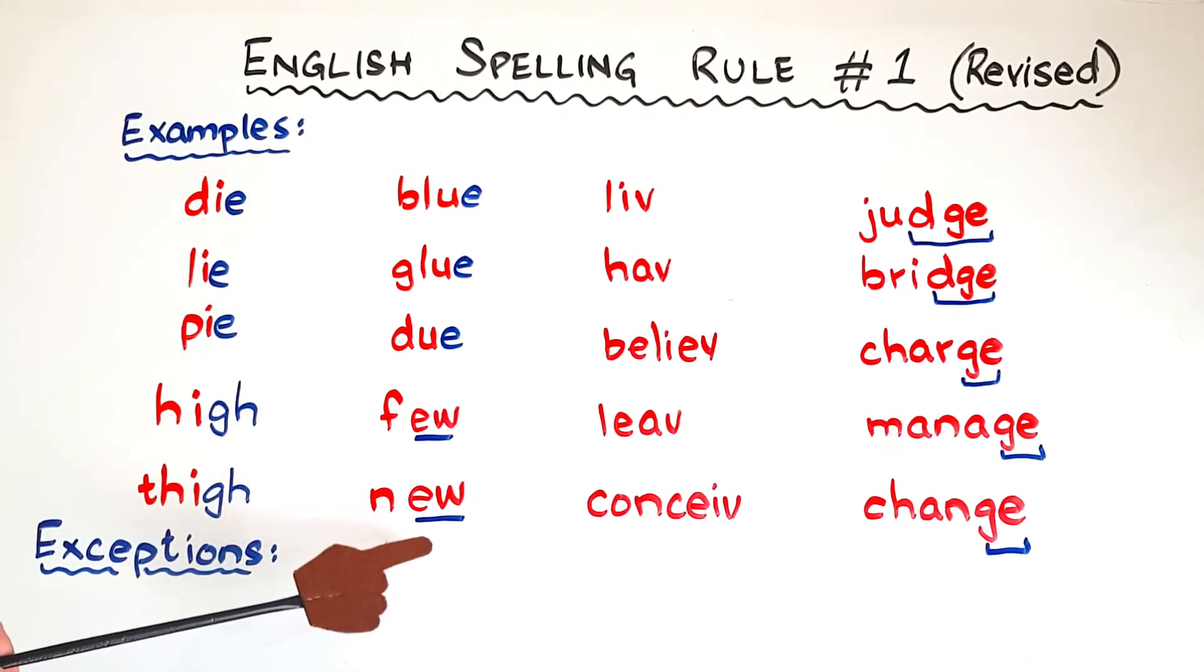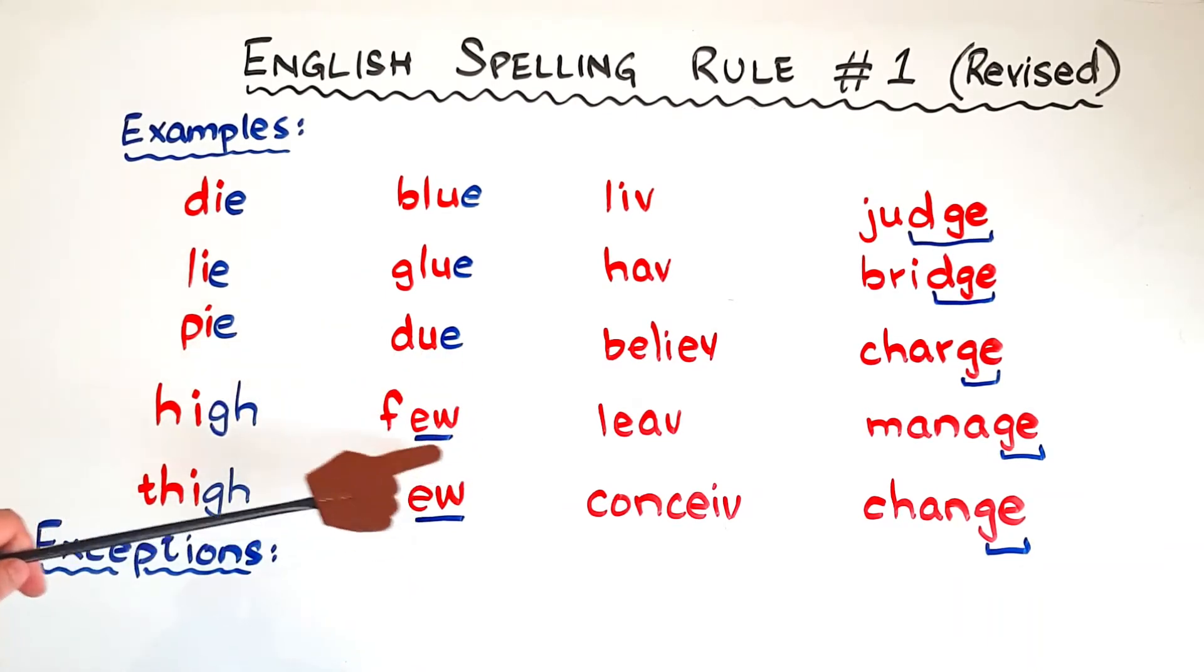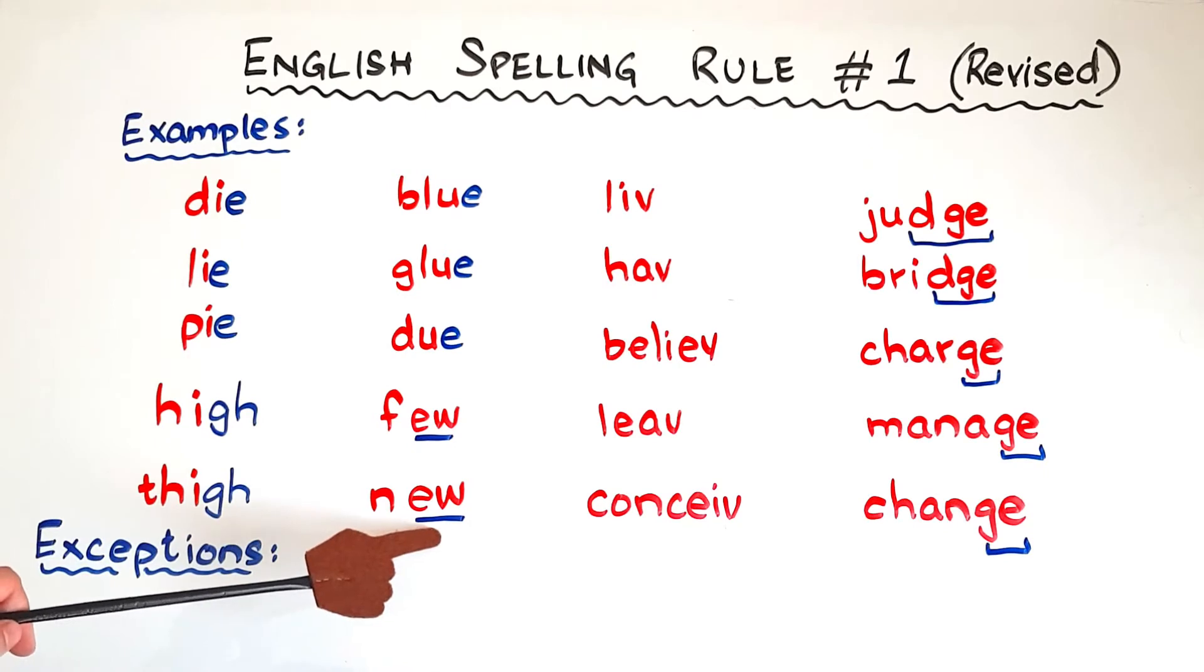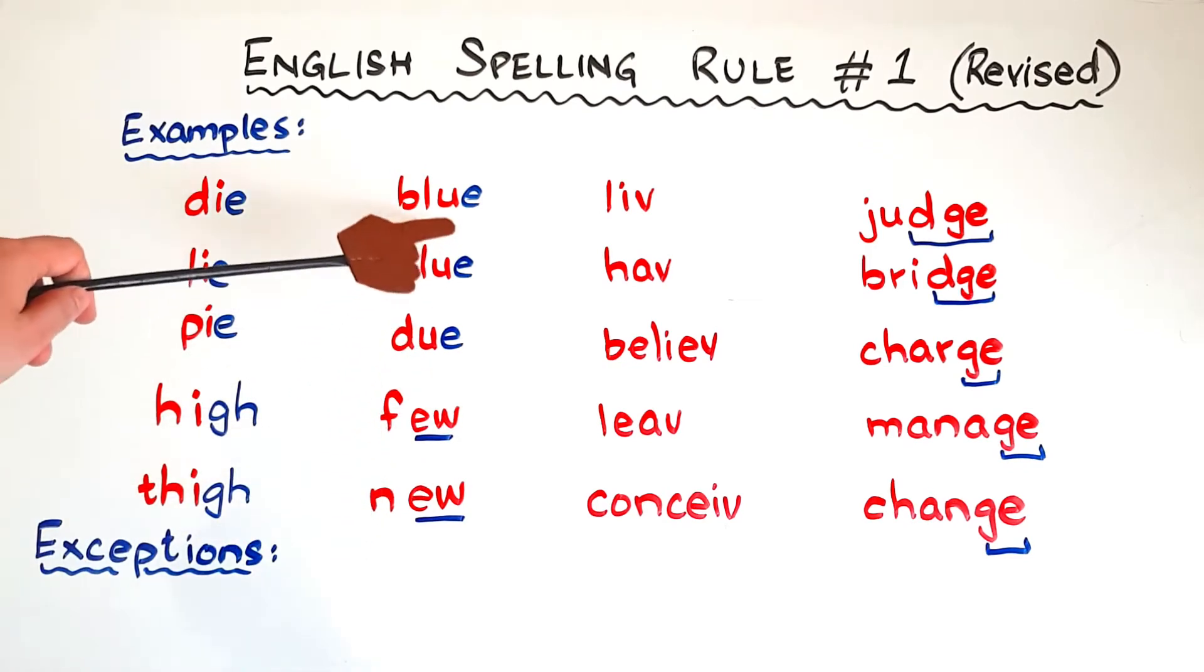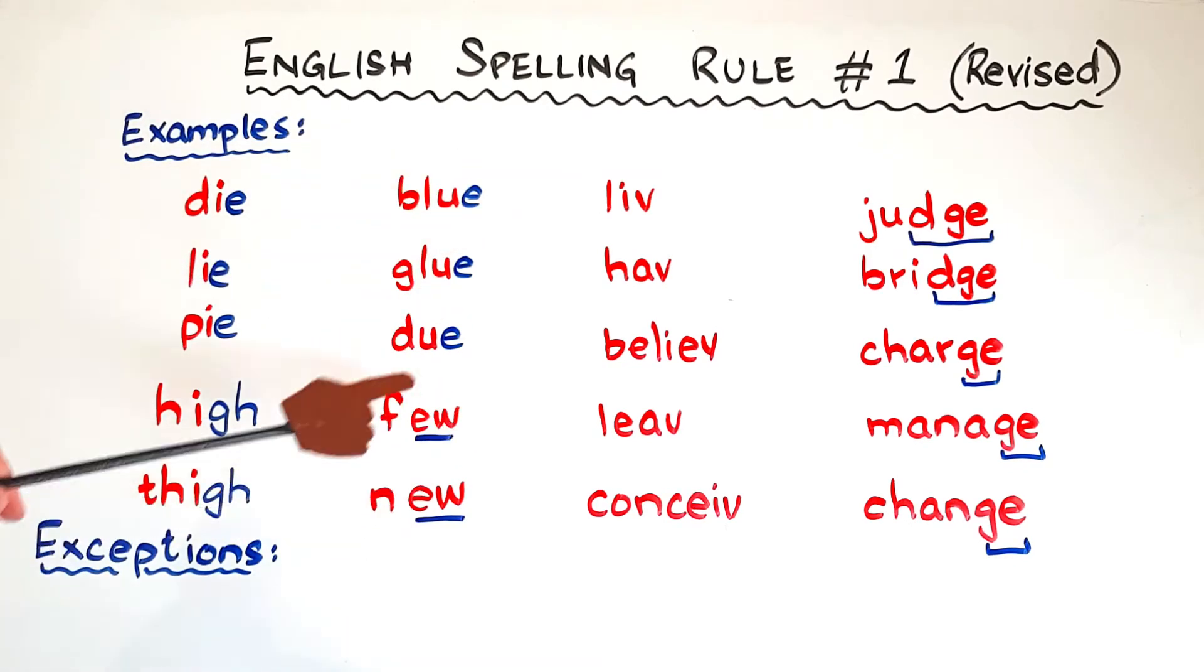Now, we have few and new. Few and new also have the U sound at the end, but look how we have written them. It's with E, W, U. E, W can also make the long U and U sound. So if you are not ending it with E, you can end the word with the alternative U spelling. If you want to learn these alternative spellings of all the vowels, check the link in the description box.